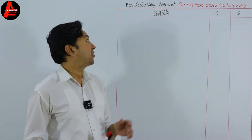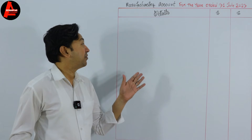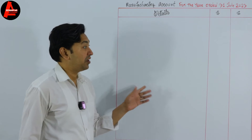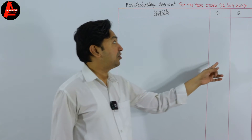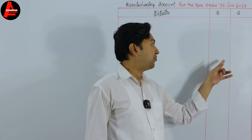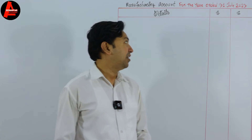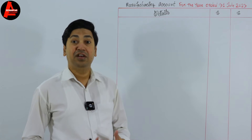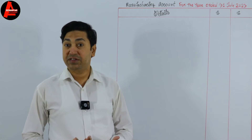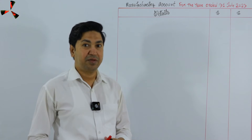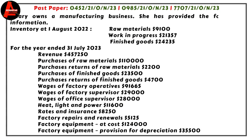So here is the format. We have a detail column here, and two dollar columns. We will write the values here. Before we start, let us have a look at the question. Hillary owns a manufacturing business and has provided the following information.